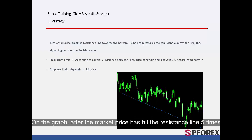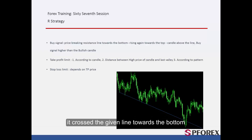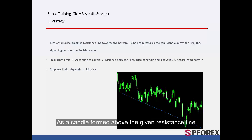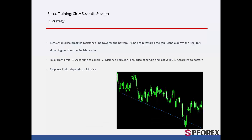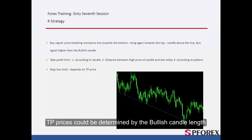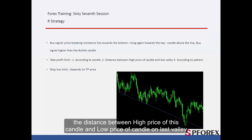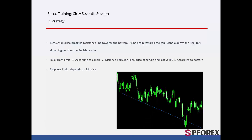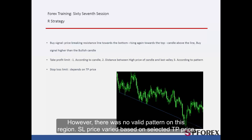On the graph, after the market price hit the resistance line five times, it crossed the given line towards the bottom, then returned towards the top. As a candle formed above the resistance line, a trader could place a buy order. TP prices could be determined by the bullish candle length and the distance between high price of this candle and low price of the candle on the last valley. However, there was no valid pattern in this region. SL price varied based on selected TP price.